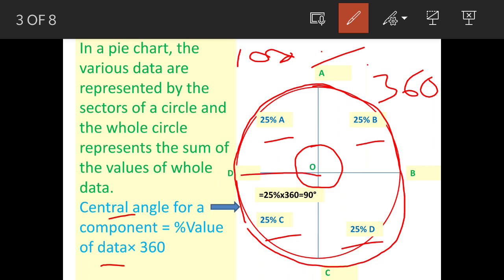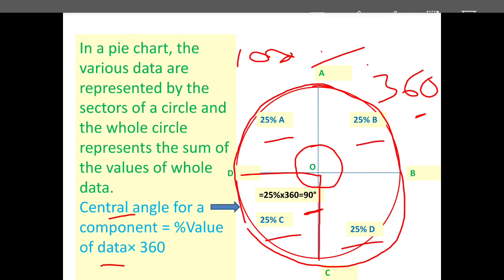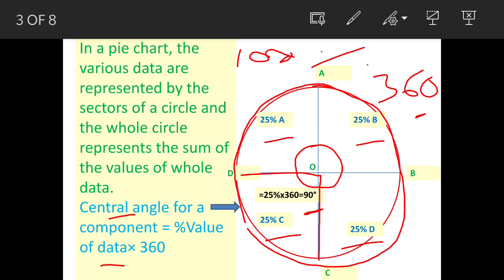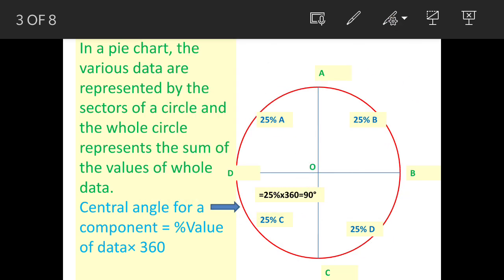So because this portion represents 25%, this will be 25% of 360. That is 90 degrees. So that will be the value of angle here. I will erase the markings and understand.